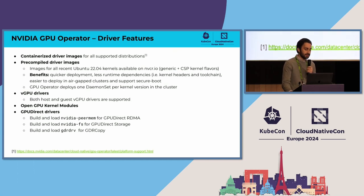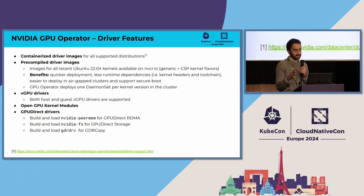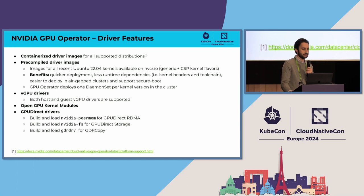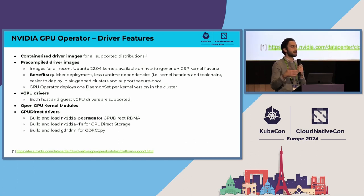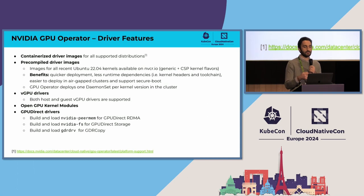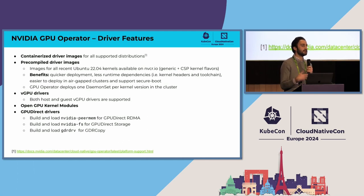We've started publishing pre-compiled images for certain distributions, in particular Ubuntu 22.04 and some kernel flavors. The operator will detect what kernels you have in the cluster and deploy a daemon set for each specific kernel version so the right image gets pulled. We also support virtual GPU drivers — a feature where you can share a GPU with multiple virtual machines — with host and guest driver components managed through the operator. We support the open GPU kernel modules announced in 2022, and advanced features like GPU Direct RDMA and storage, which allow data transfer between the GPU and external devices like InfiniBand or storage, bypassing the CPU.